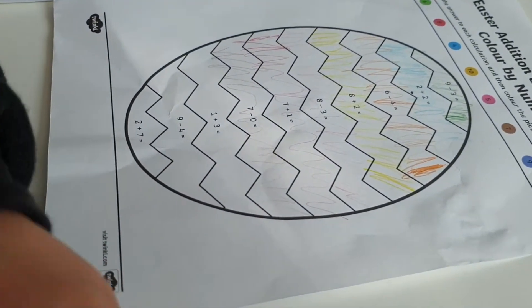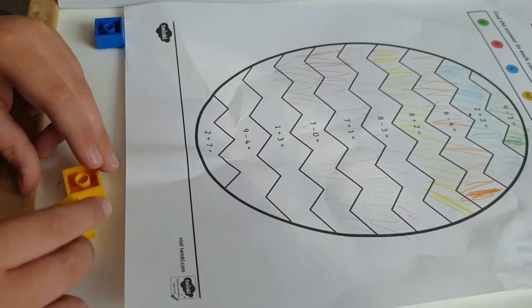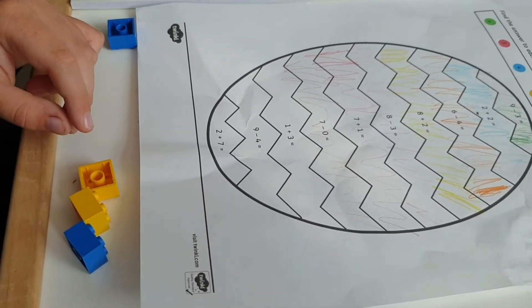A one and a three. So can you put one block to one side and then can you put three blocks? One, two, three.